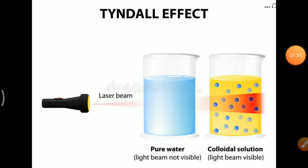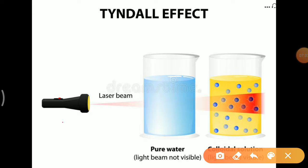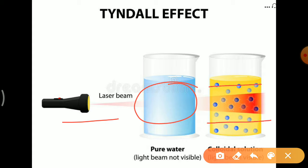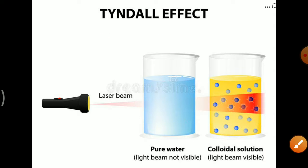You can clearly see here with a laser beam: we can't see the path of light in pure water, but in a colloidal solution the path of the light is clearly visible because there are small particles which scatter the light and make the path visible. This is our Tyndall effect. That's all for today — in our next class we will continue with the same topic and discuss the different properties of colloidal solutions. Thank you so much.